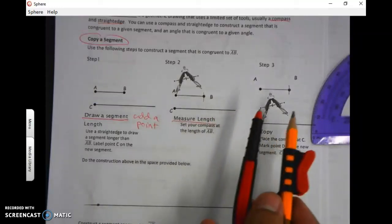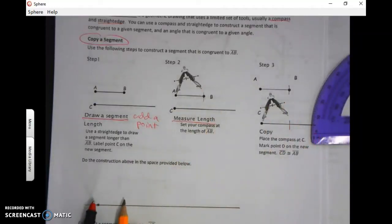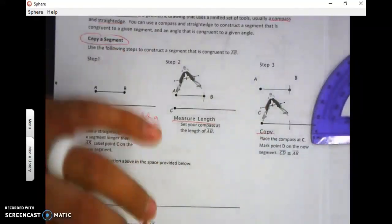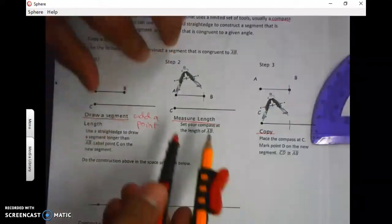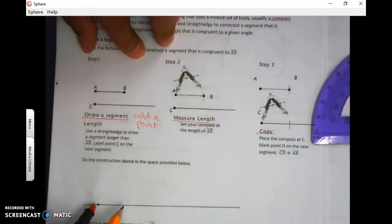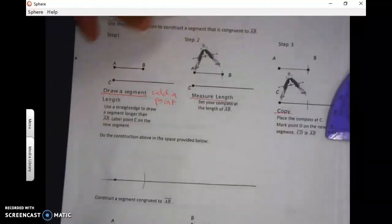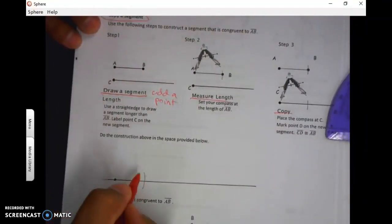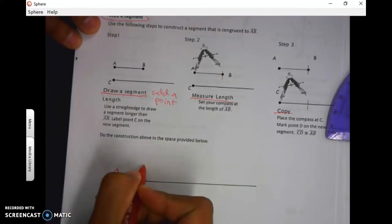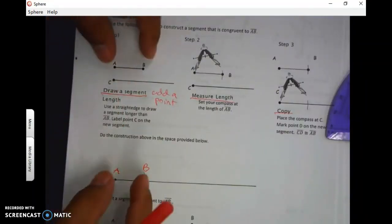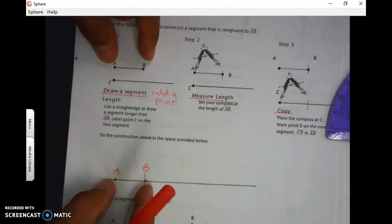Step three says to take that over to your new segment down here. It says literally just the word 'copy,' and that's what we're going to do. So I'm going to take this length, put my pointy part on the dot, and make a little arc. So this arc is a point that should be just as long as AB up here is AB down here. Don't these look equal? And if you did it correctly, they will be equal.